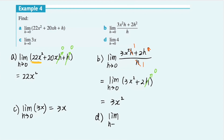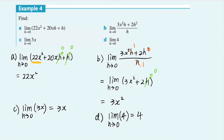Question d: the limit of 4 as h approaches zero is simply 4, because again there is no term containing h. The key thing to remember: if you have an expression with h in the denominator, you cannot set it equal to zero as it would be undefined — so simplify the expression first before letting h approach zero. I hope you found this video helpful and I'll see you in the next video. Bye!